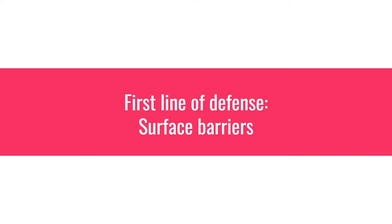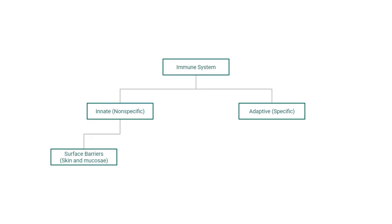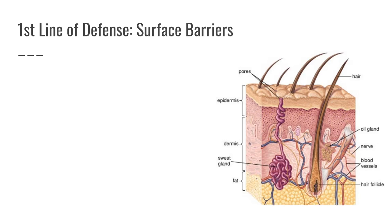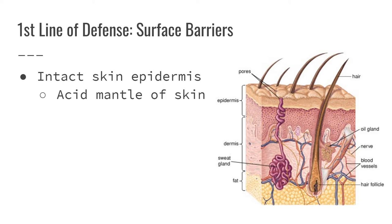Starting with the innate system, we're going to talk about the first line of defense: our surface barriers — the human version of the moat around the castle. The skin's intact epidermis forms a strong mechanical barrier. The epidermis also secretes sweat and sebum, which make the surface of the skin acidic, inhibiting bacterial growth — this is referred to as the acid mantle. Skin also contains the protein keratin, which helps form tight junctions between cells, keeping bacteria out because they literally can't squeeze between them. Keratin also provides resistance against acids and enzymes.